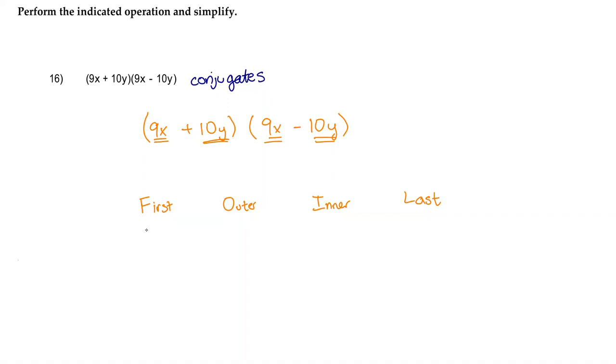So our first terms are 9x times 9x. Our outer terms are 9x times negative 10y. Our inner terms are 10y times 9x. And our last terms are 10y times negative 10y.